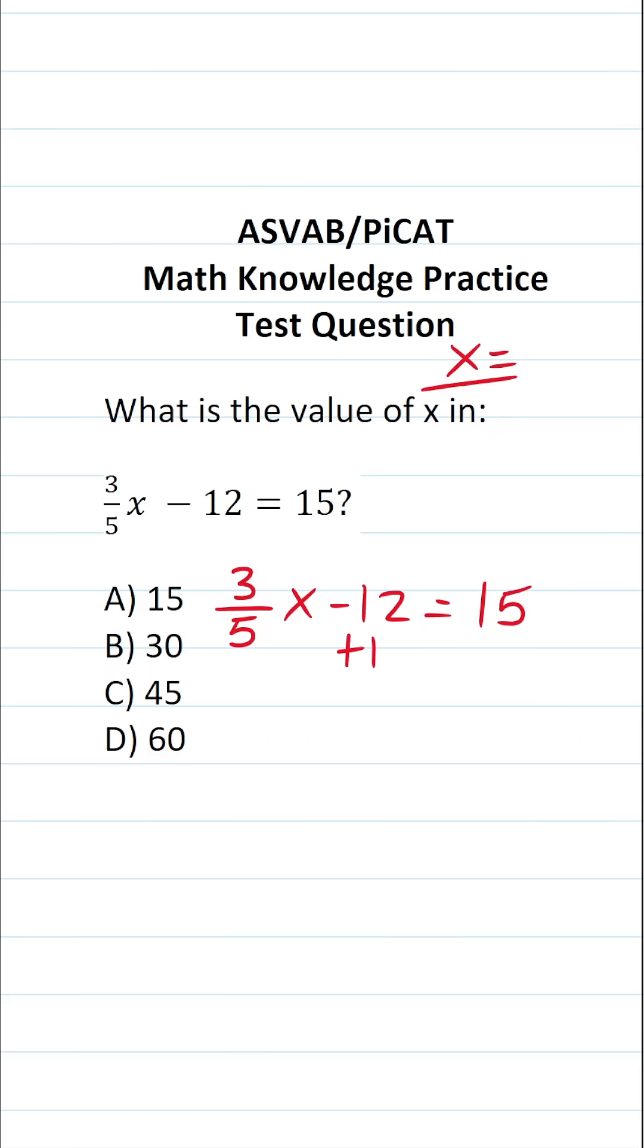So the first thing we're going to do as we solve this equation is move 12 to the other side via addition. In doing so, this crosses out, leaving us with 3 fifths x over here. What is 15 plus 12? Well, 5 plus 2 is 7, 1 plus 1 is 2, so this is 27.